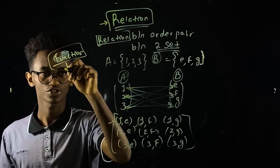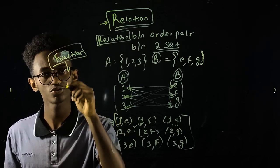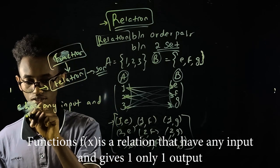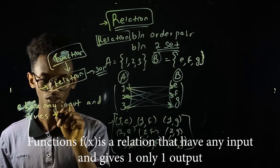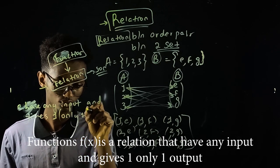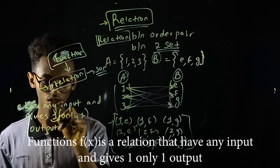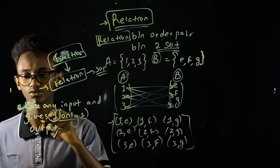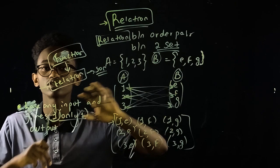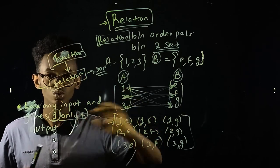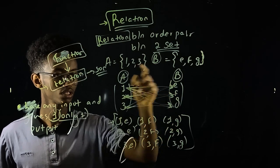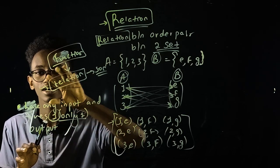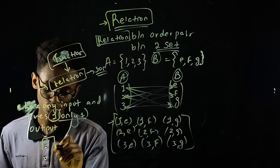What is a function? A function is: any input has any input and gives only one output. Only one output — that is the key restriction.